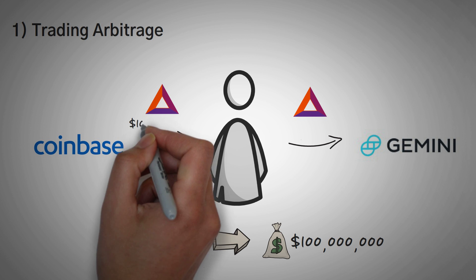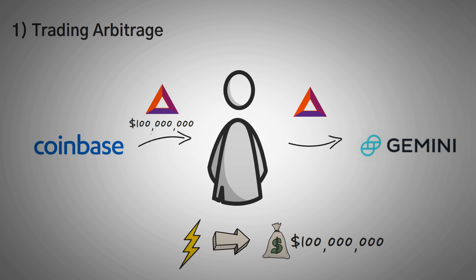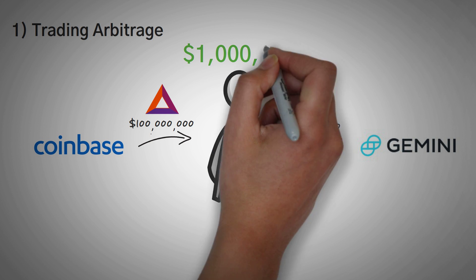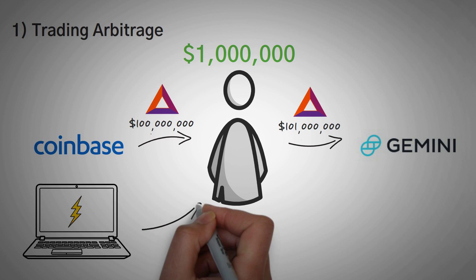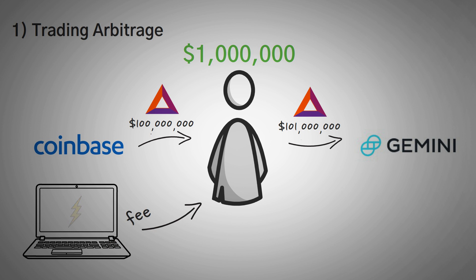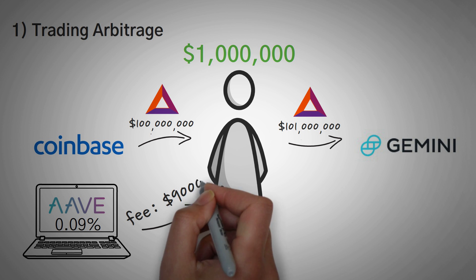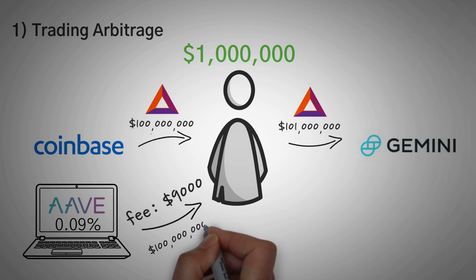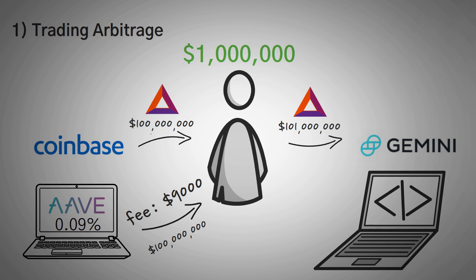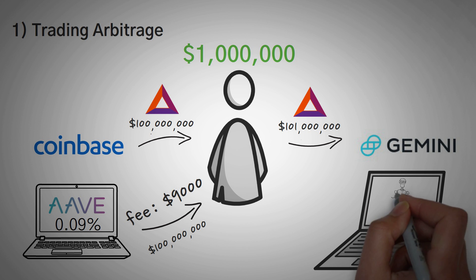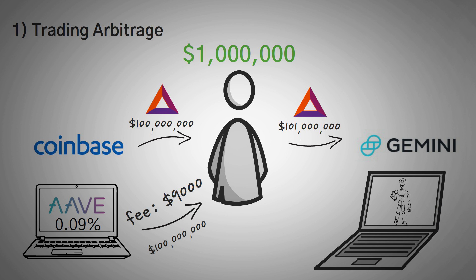Let's go through that example. Say you bought $100 million worth of Basic Attention Token on Coinbase and then sold it to Gemini for $101 million, making a really nice $1 million profit. The platform you borrowed from does charge a small fee — Aave charges 0.09%, so that would only be a $9,000 fee to borrow $100 million. This is one of the most common uses of a flash loan, and it didn't take long for people to write automated bots that did this automatically, which is why it's now rare to find a flash loan arbitrage opportunity.